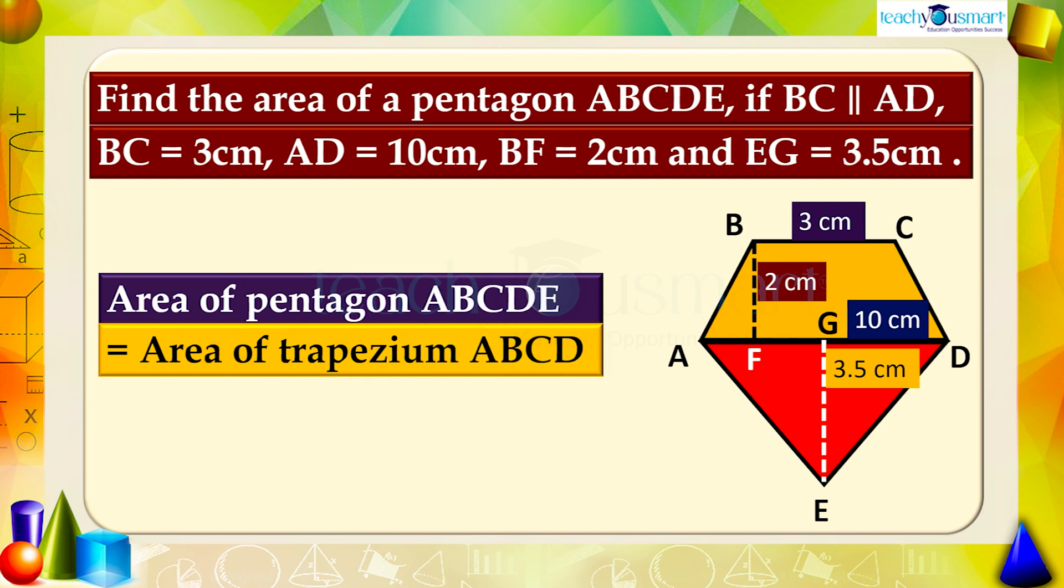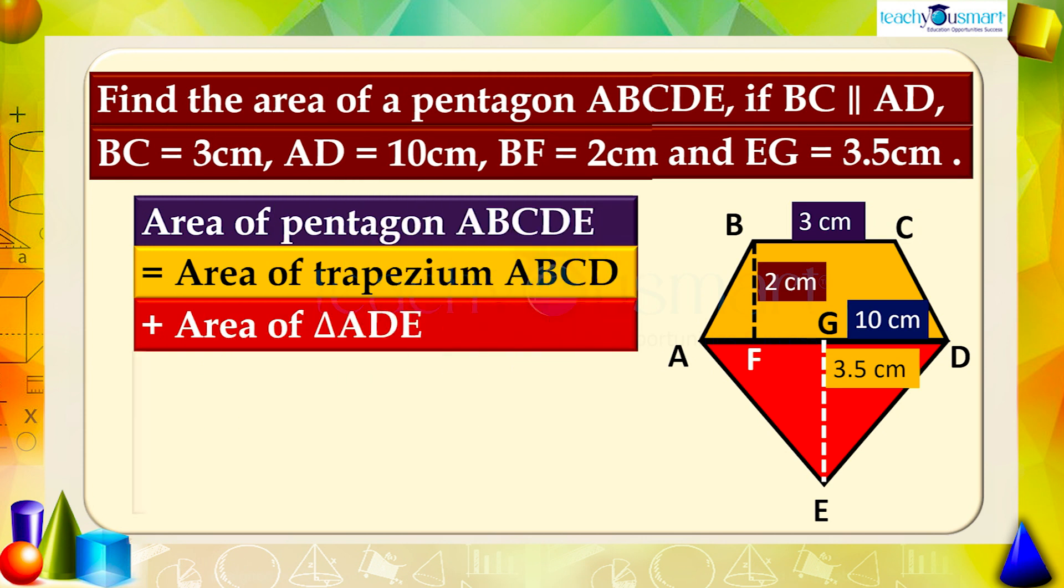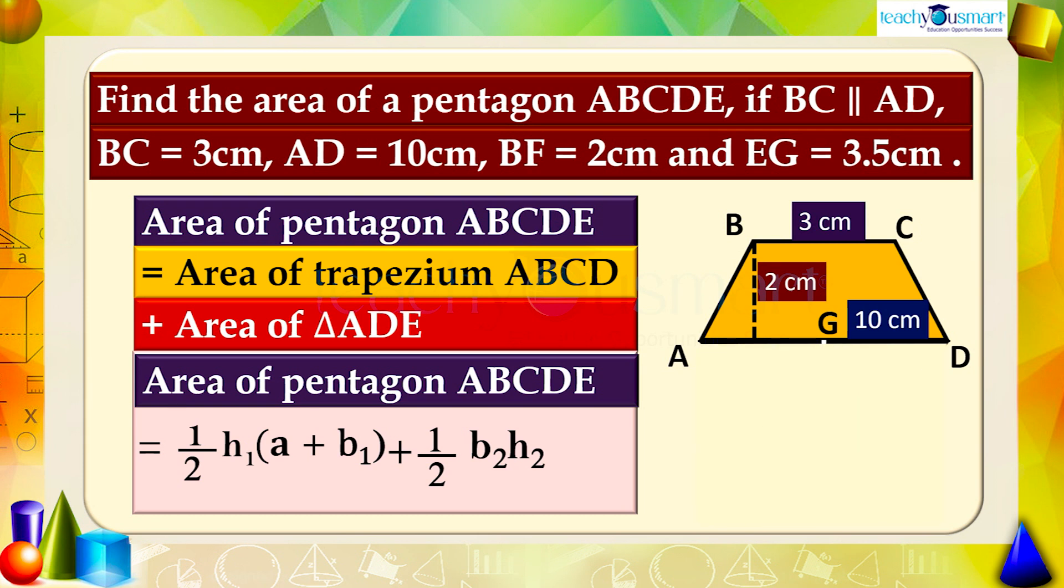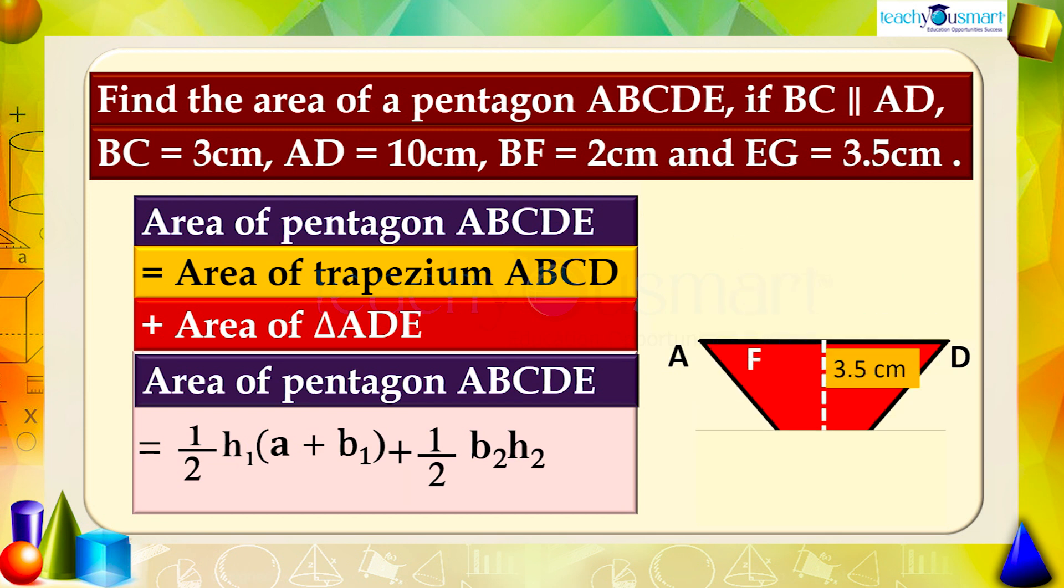That is, the area of pentagon ABCDE equals one-half h₁(a + b₁) plus one-half b₂h₂. Here h₁ and b₁ are the height and base of the trapezium, and h₂ and b₂ are the height and base of the triangle.